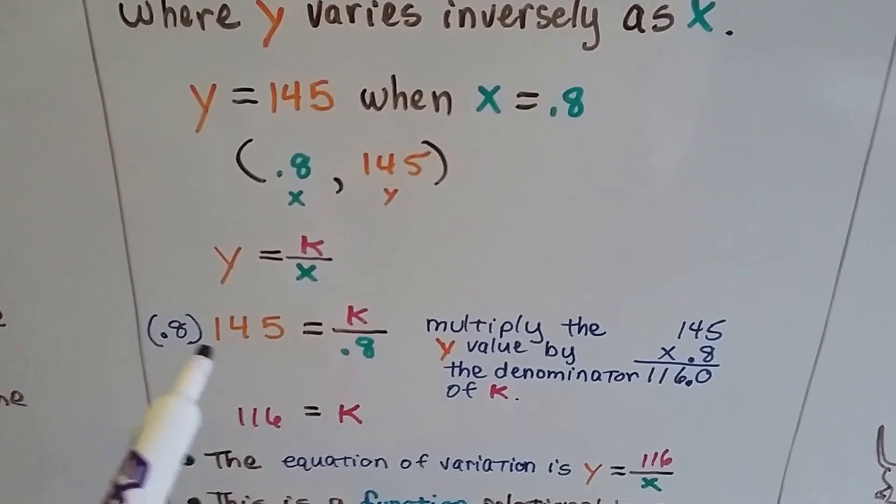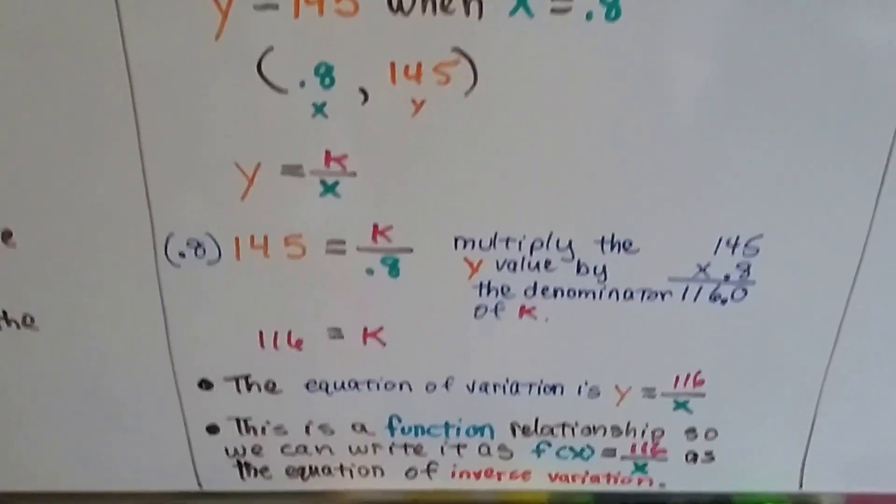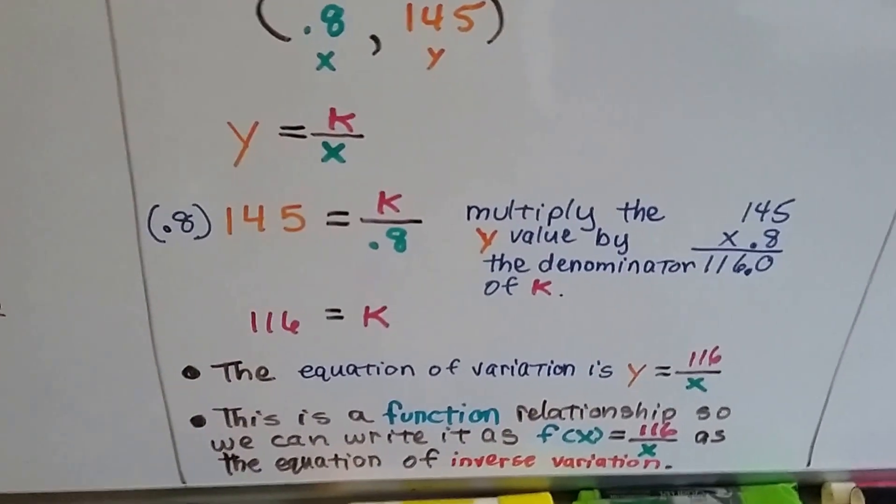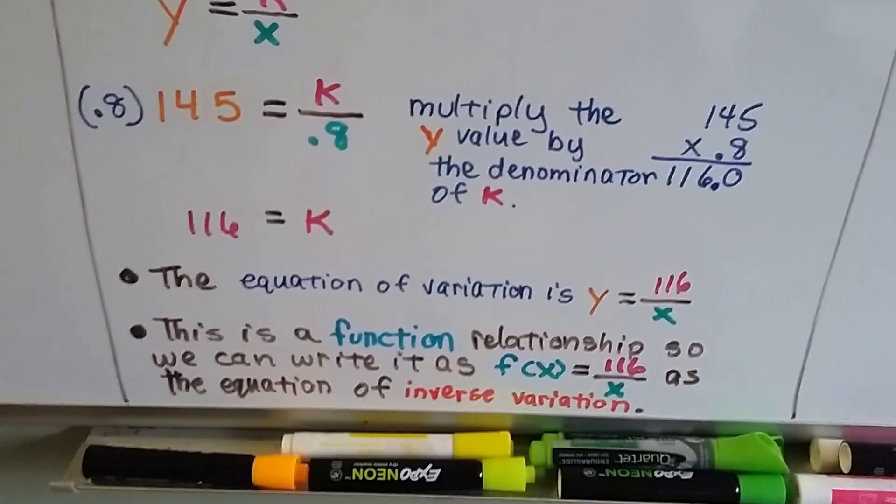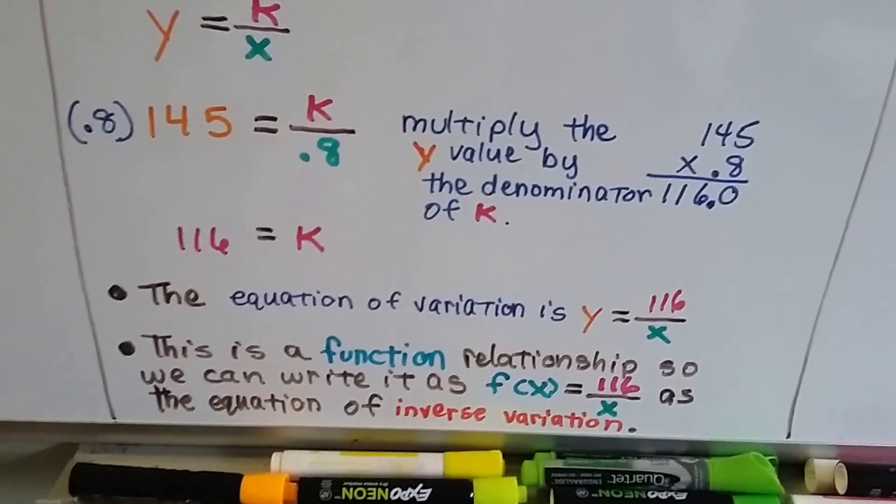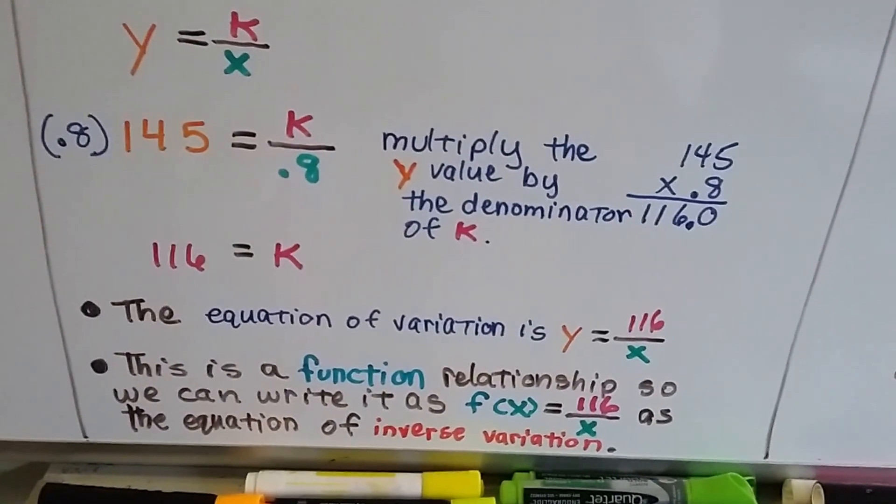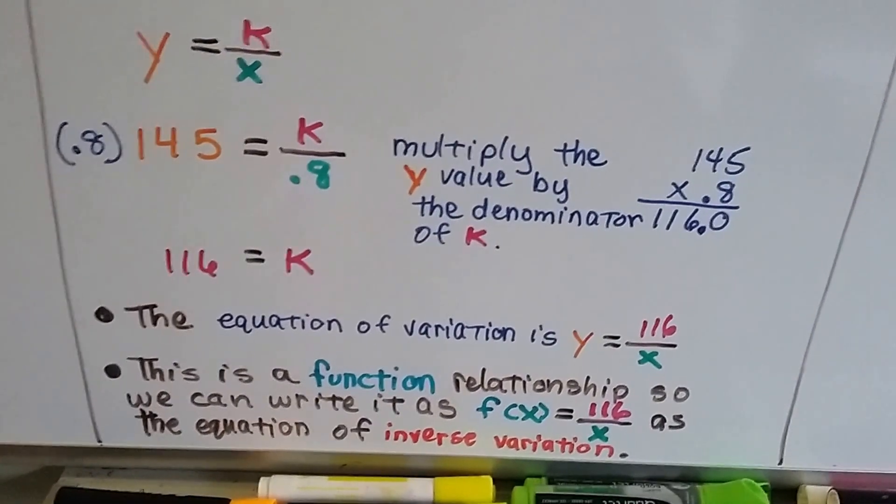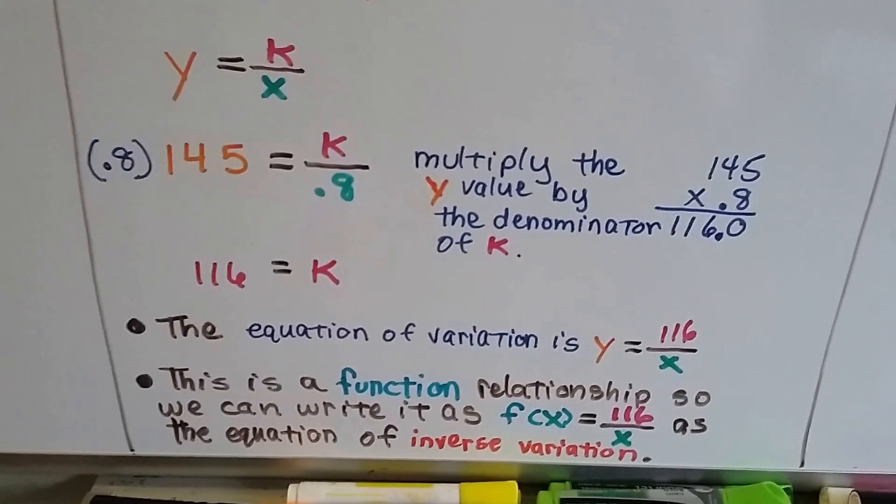All we have to do is multiply this y value by the denominator of k, and 145 times 8 tenths comes out to 116. So k equals 116. The equation of variation is y equals 116 divided by x. And since this is a function relationship, we can write it as f of x equals 116 divided by x, as the equation of inverse variation.